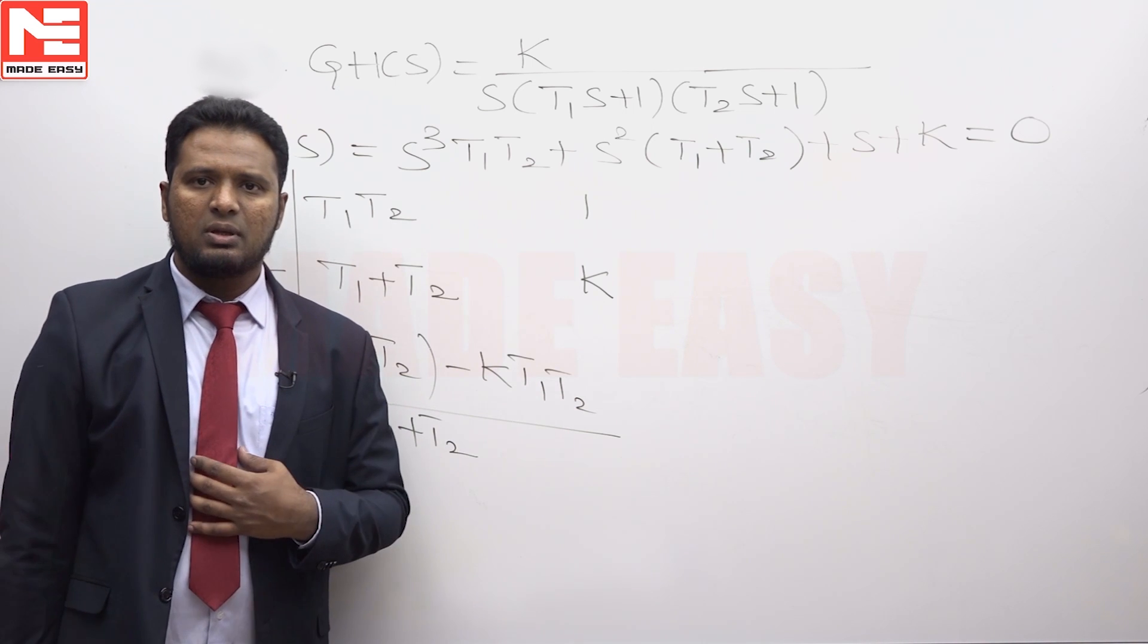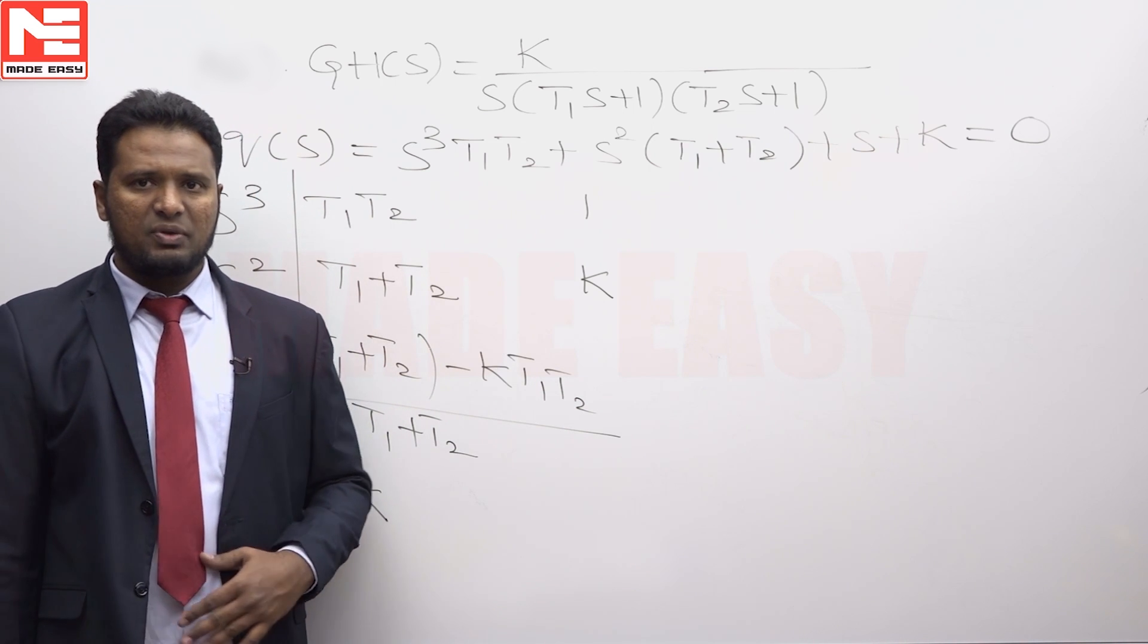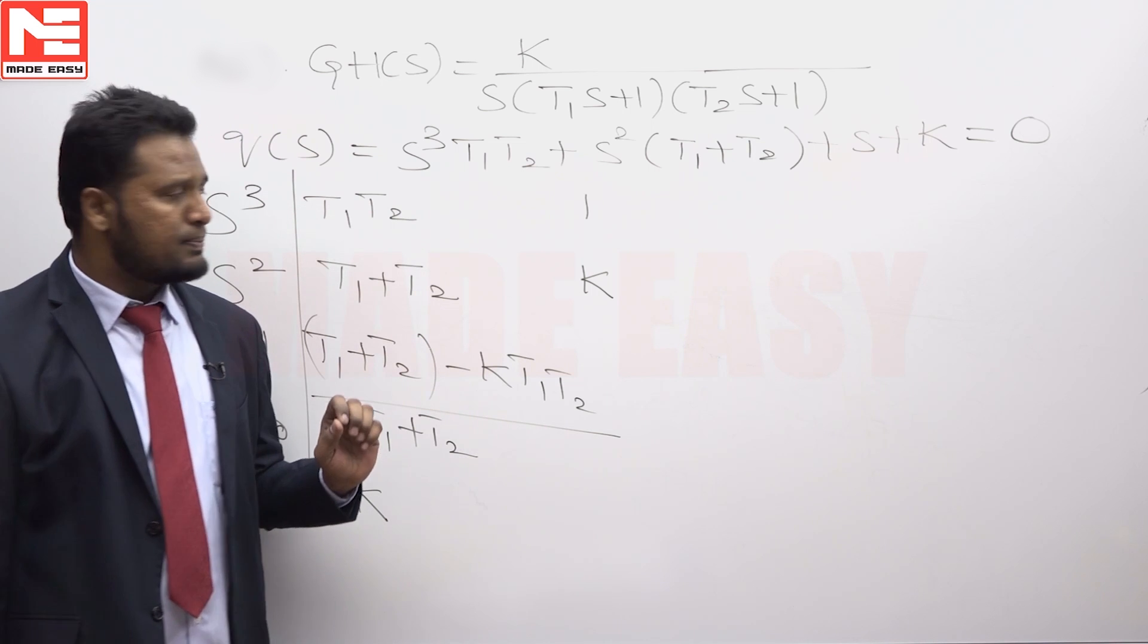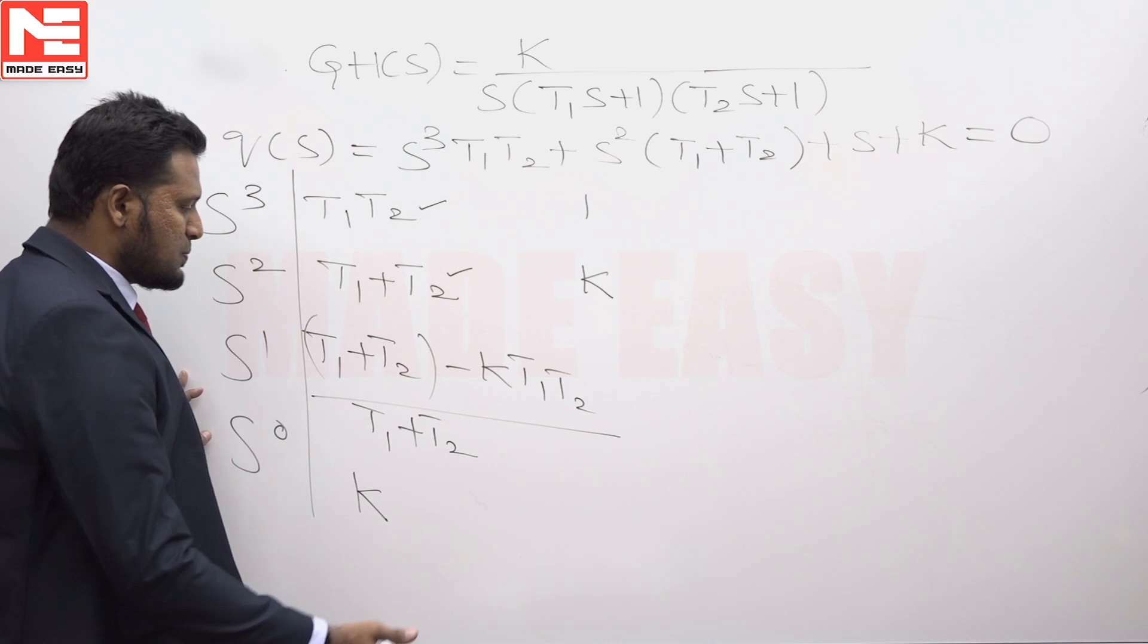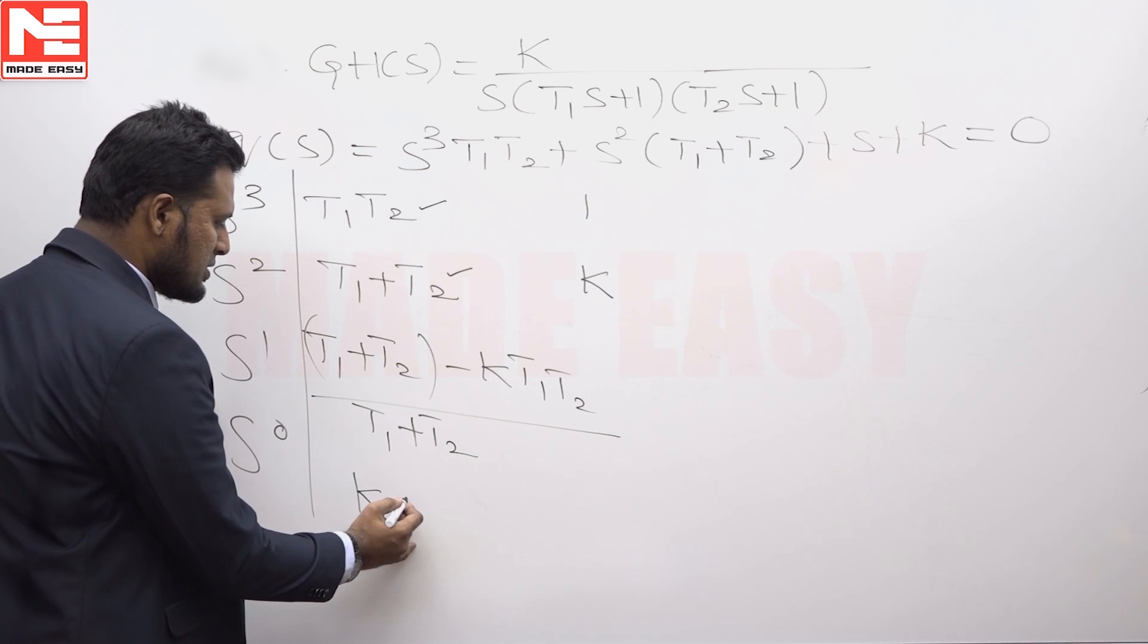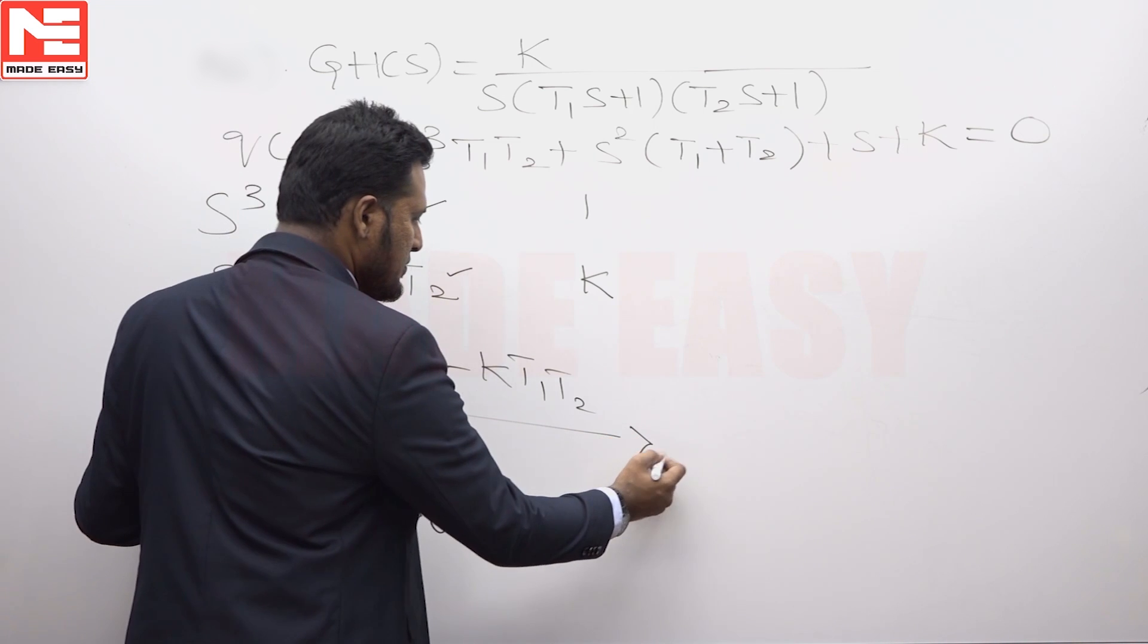For the system to be stable, all the elements of the first column must have the same sign. T₁T₂, being the time constants, are positive. So these elements are positive. This needs to be positive, and this needs to be positive.